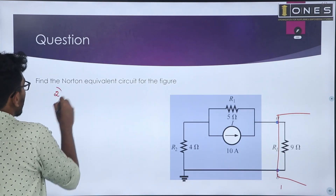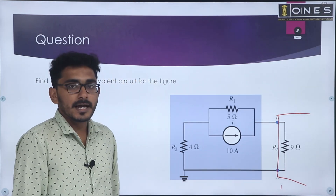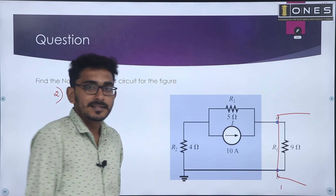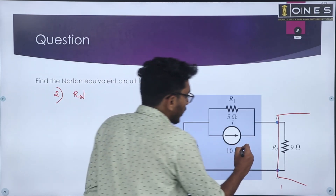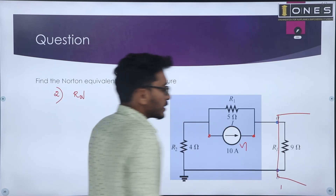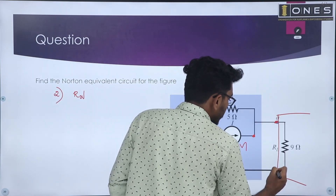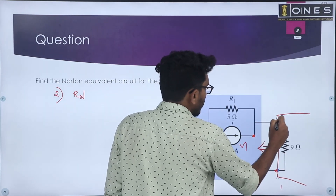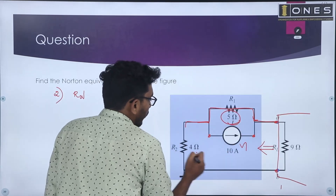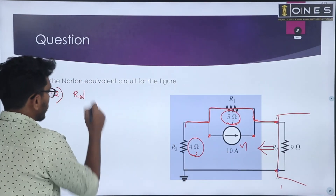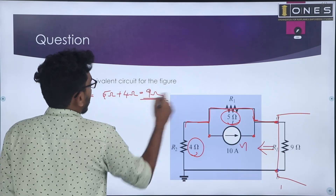Second step: we have to find the Norton's resistance RN. To calculate the Norton's resistance, we replace voltage sources by short circuit and current sources by open circuit. So the current source is represented as open circuit. Now find the resistance at those two terminals. The 5 ohm and 4 ohm are connected in series, which means that RN is equal to 5 ohm plus 4 ohm, that is equal to 9 ohm.